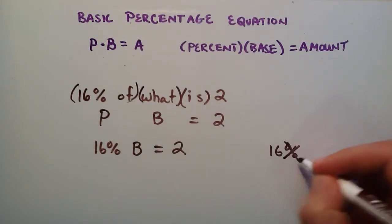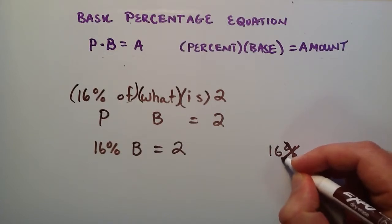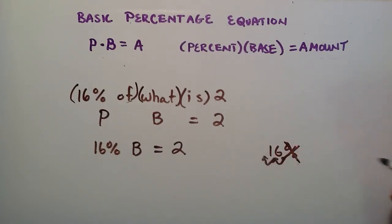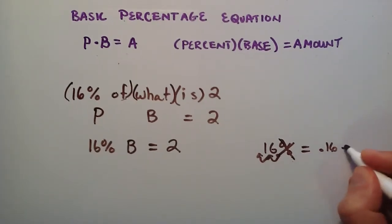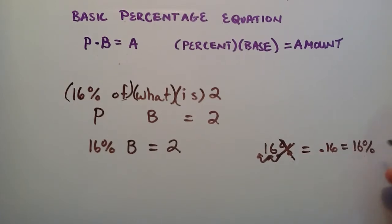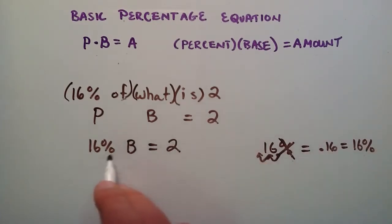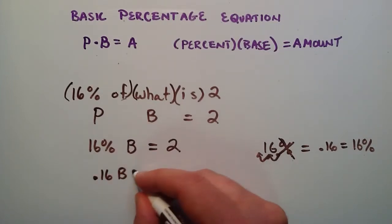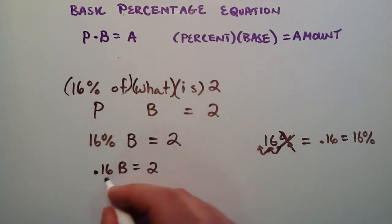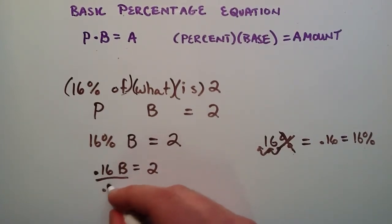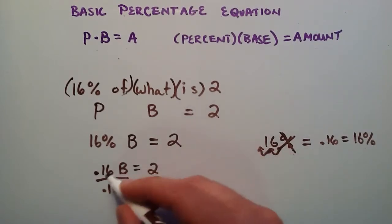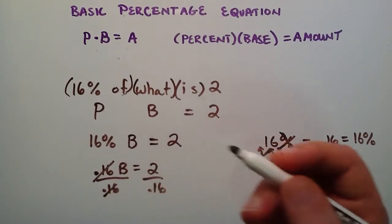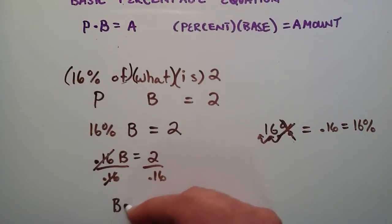16% we want to write as a decimal form so we can do some math with it. We're going to get rid of this percentage sign, then move the decimal two units to the left, giving us 0.16. So 0.16 is the same as 16%, just written in a form we can use in our equation. So 0.16 times B equals 2. Now to solve this, we simply divide each side by 0.16, and 0.16 cancels.